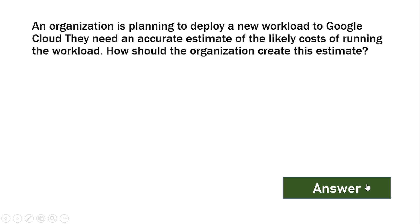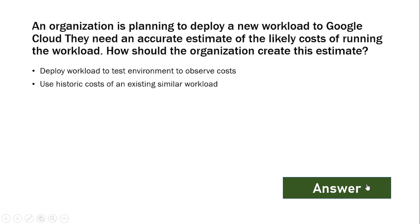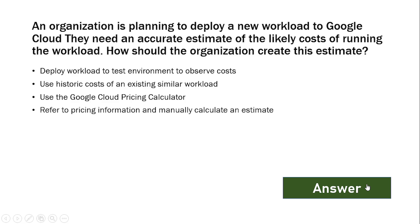An organization is planning to deploy a new workload to Google Cloud. They need an accurate estimate of the likely cost of running the workload. How should the organization create this estimate? The options are: deploy the workload to a test environment to observe cost; use historic cost of an existing similar workload; use the Google Cloud Pricing Calculator; refer to pricing information and manually calculate an estimate.